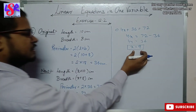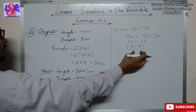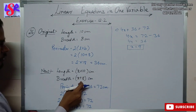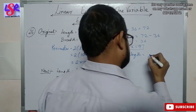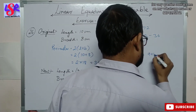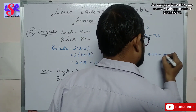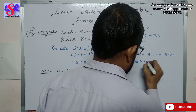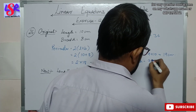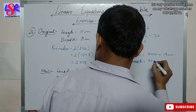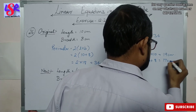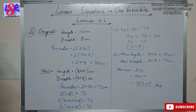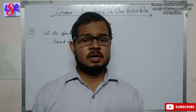Placing the value of x = 9 to get the new dimensions: new length equals 9 plus 10 equals 19 centimeters, and new breadth equals 9 plus 8 equals 17 centimeters. The area of the new rectangle is 19 into 17, which equals 323 centimeters squared.